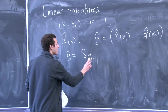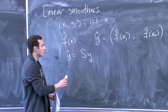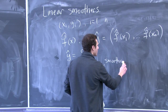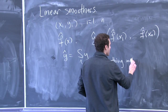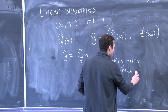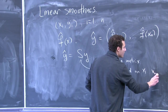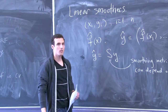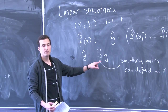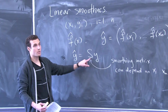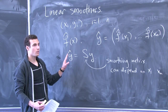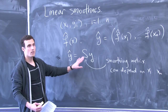Linear smoothers have the following feature: y-hat is just some matrix S times y. S is called the smoothing matrix. It can depend on x — that's perfectly fine. It can depend on other things, like a tuning parameter. So if we were doing smoothing splines, this could depend on lambda, the penalty parameter. If we were doing k nearest neighbors, this could depend on k. But it can't depend on y. That's the important part. The relationship between y-hat and y is just some matrix times y.